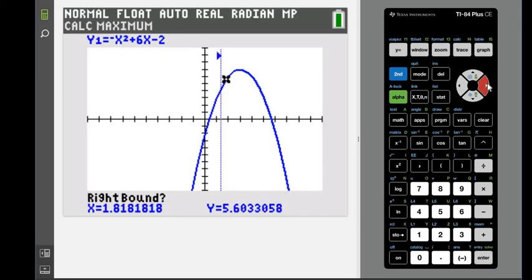And then I want to go to the opposite side, because now it says the right side. So as long as it's flashing to the right side of your highest point, you're good. And then just hit enter one more time.